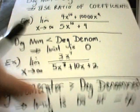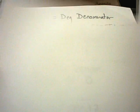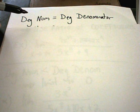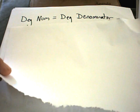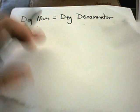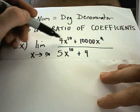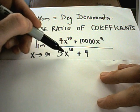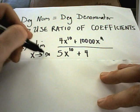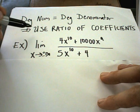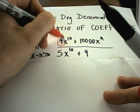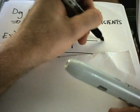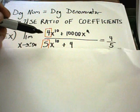Some useful tricks for these limit problems are as follows, and these work if you have a rational function — a polynomial over a polynomial. The first case: if the degree of the numerator is the same as the degree of the denominator, you look at the highest power on top — say x to the 10th — and the highest power on the bottom — also x to the 10th — and whether x is going to positive or negative infinity, the solution is the ratio of the coefficients. For example, 4x to the 10th over 5x to the 10th gives 4 fifths.